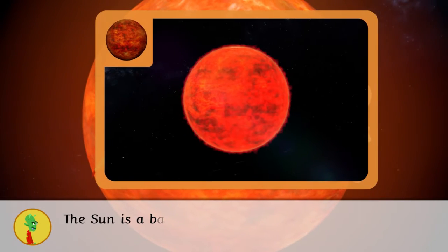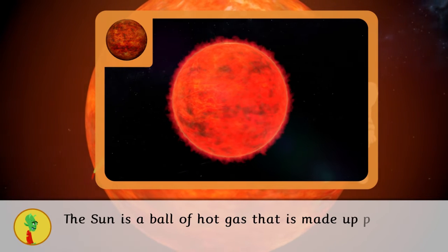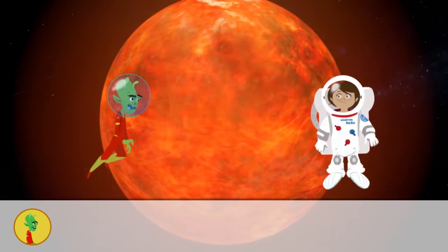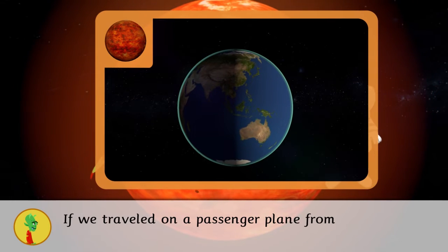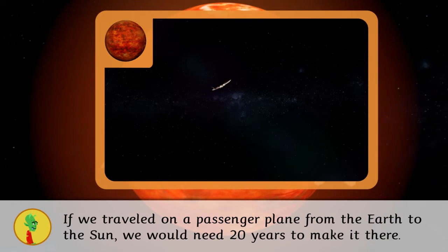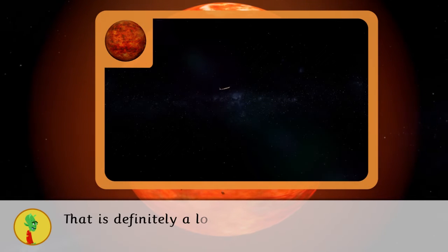The Sun is a ball of hot gas that is made primarily of hydrogen and helium. If we travelled on a passenger plane from the Earth to the Sun, we would need 20 years to make it there. That is definitely a long trip!